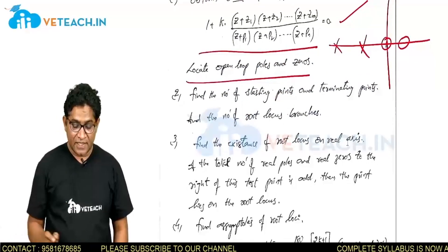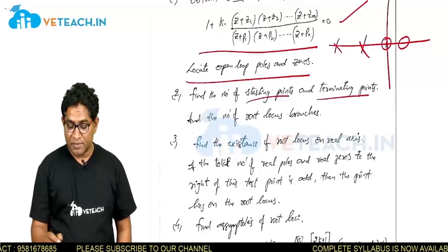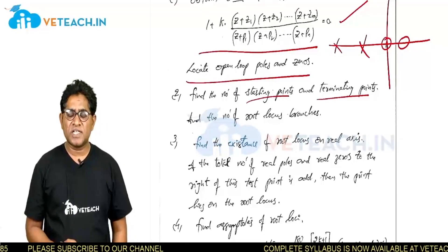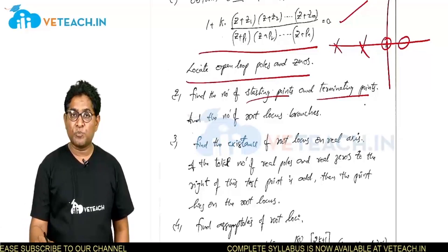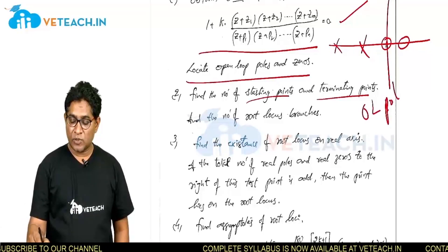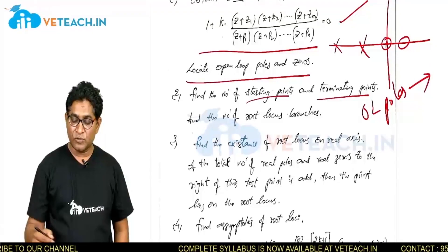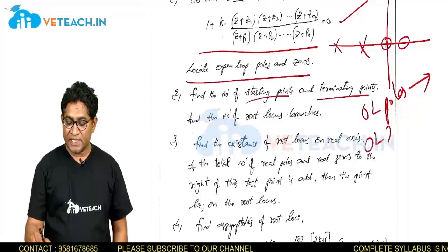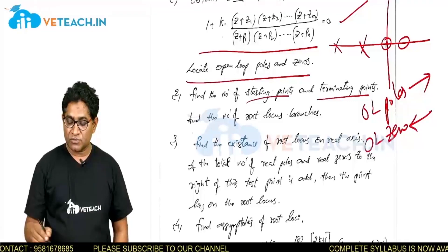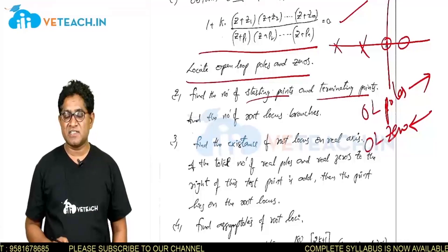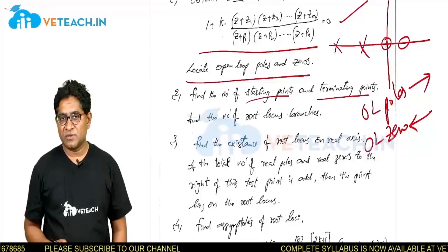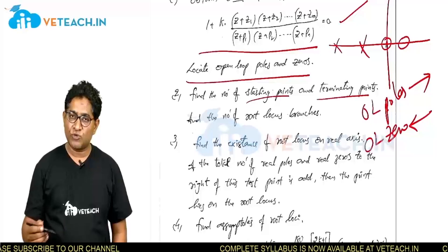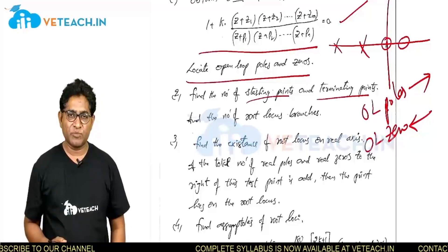Next, find the number of starting points and terminating points. Root locus starts at open loop poles and terminates at open loop zeros. The first preference is to terminate at a zero; if no zero is available, it will go to infinity. These are the starting and terminating points.